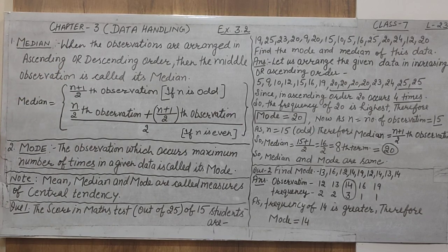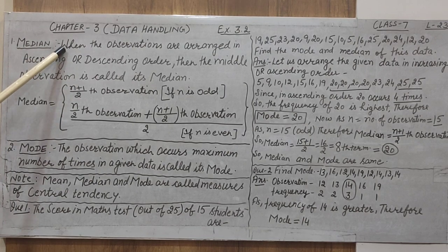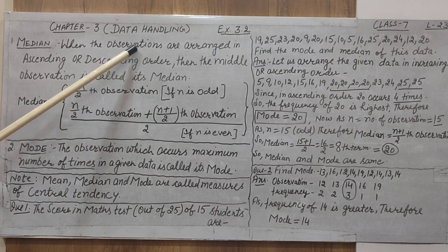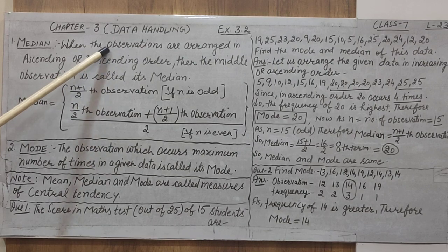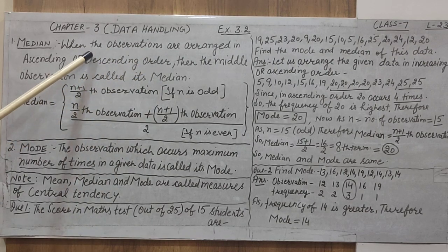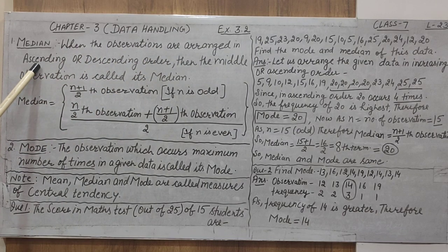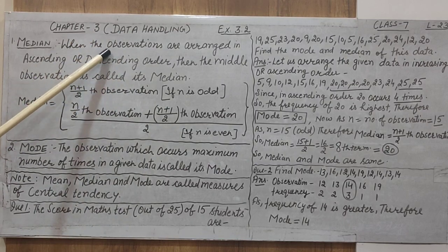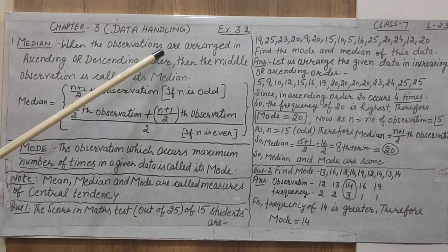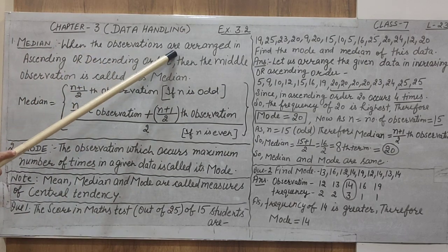Now, come towards the next part, which is the median. What is the median? First of all, understand the definition. When the observations are given — they may be in the form of marks, weight, rupees, or anything else with similar quality — and when they are arranged in ascending or descending order, in the case of mean we just add all the observations without arranging them. But in median, the observations are arranged.